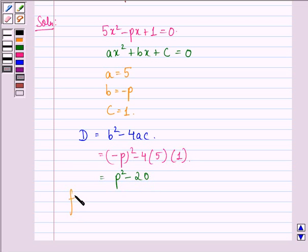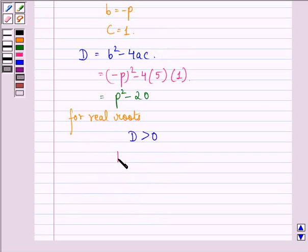Now for real roots, we have the discriminant should be greater than 0. That is, b² - 4ac should be greater than 0.